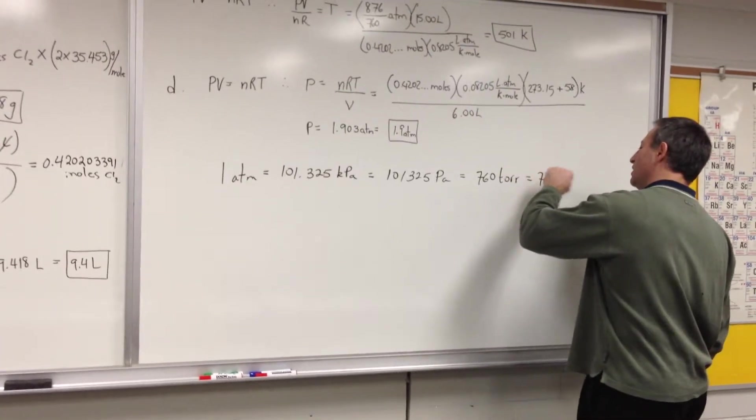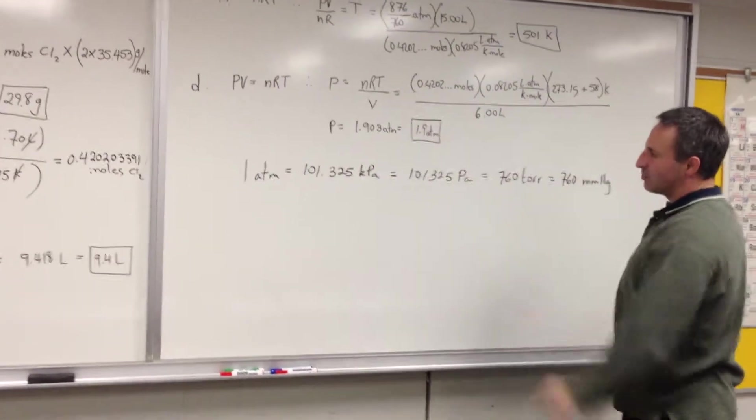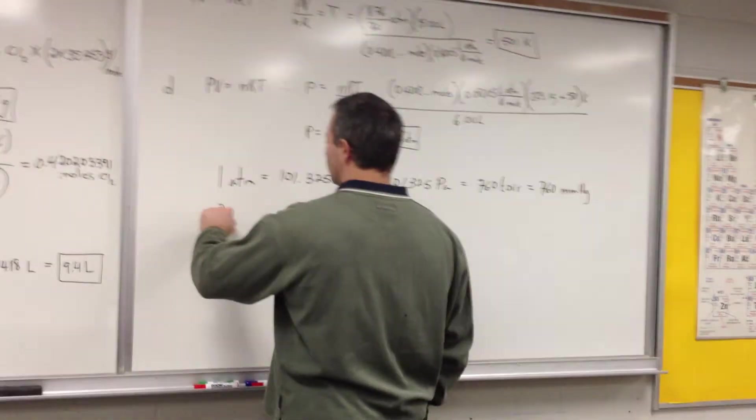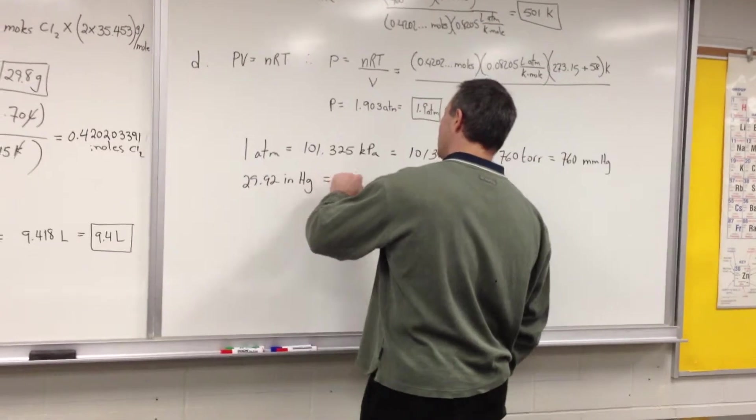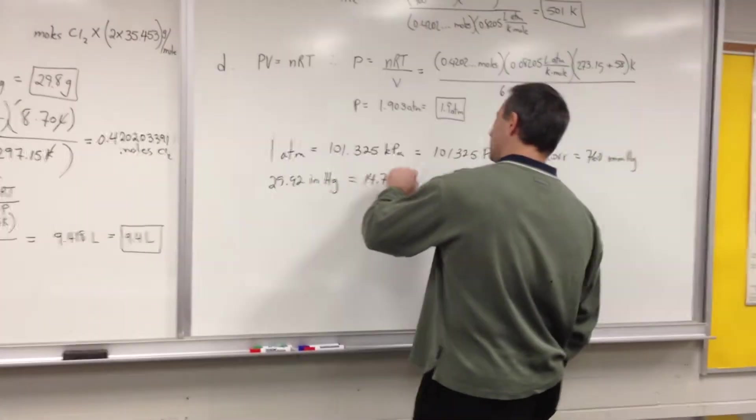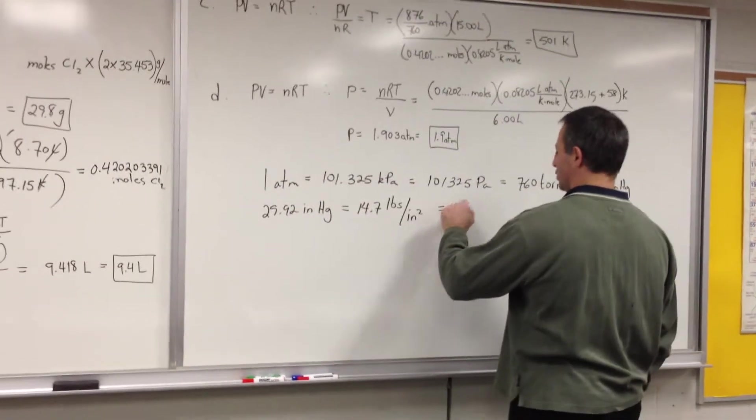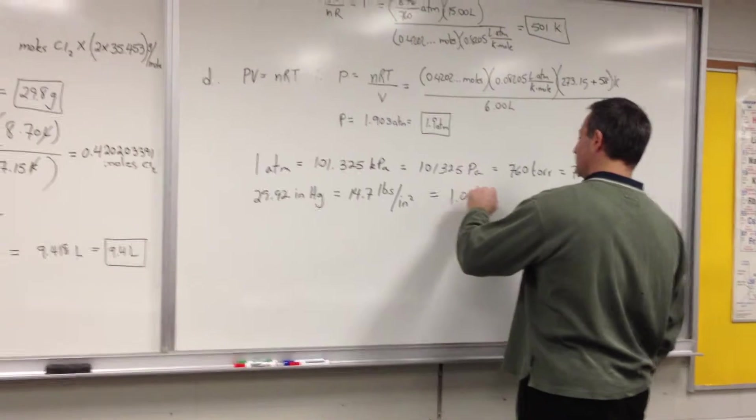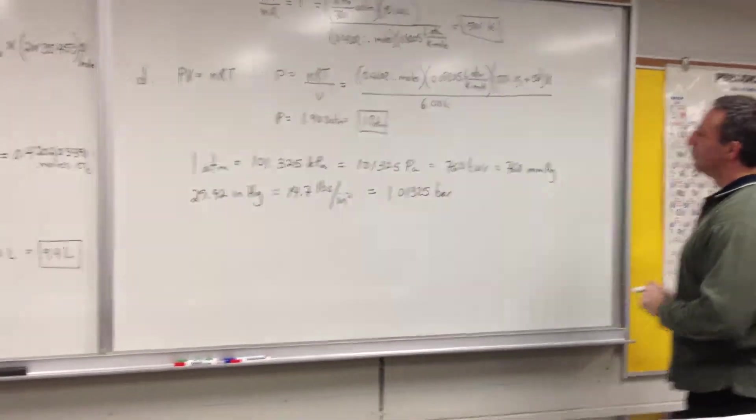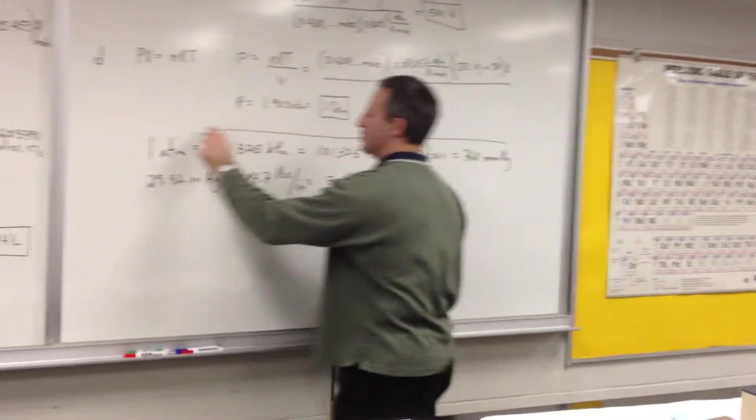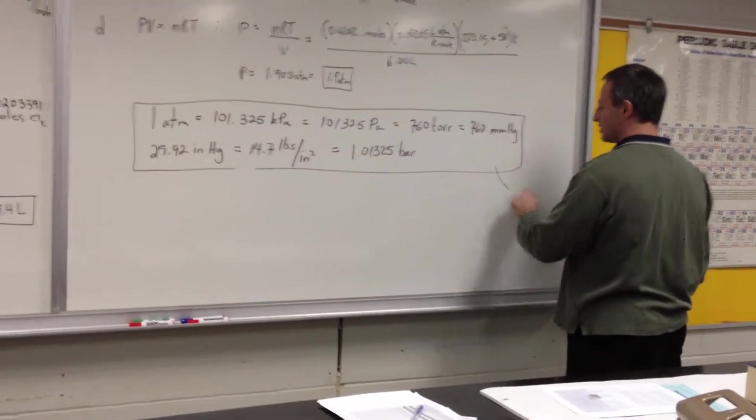Which is equal to 760 millimeters Hg. Now these are the most commonly used units. Sometimes you'll see 29.92 inches of mercury. Sometimes you might even see 14.7 pounds per square inch. And you'll also see bar, which is 1.01325 bar. This should be memorized. It should be committed to memory so that you don't suffer anxiety every time you see a pressure unit that is not familiar.